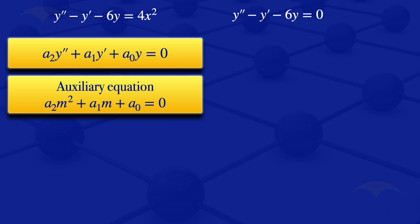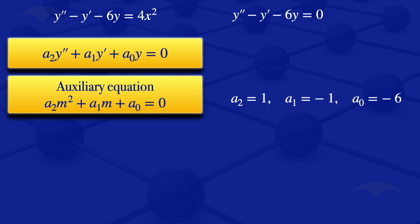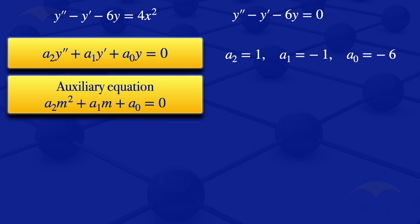For a2, we compare the coefficients of y prime prime; for a1, the coefficients of y prime; and for a0, the coefficients of y. By comparing the coefficients of y prime prime and y prime, we have a2 equals 1, a1 equals minus 1, and a0 equals minus 6.